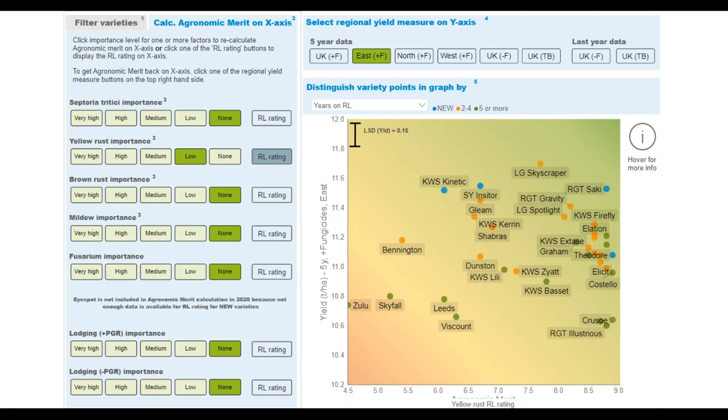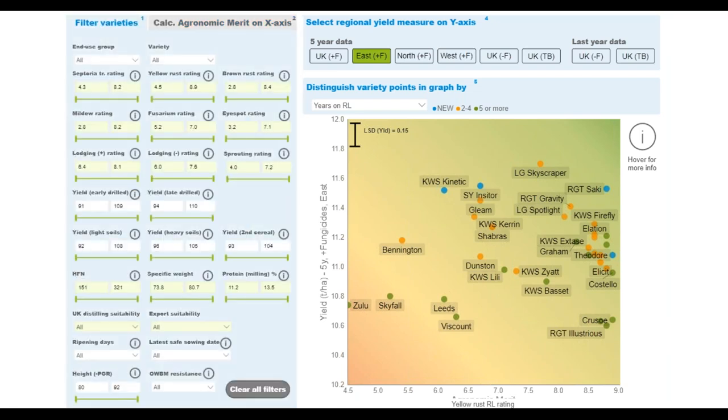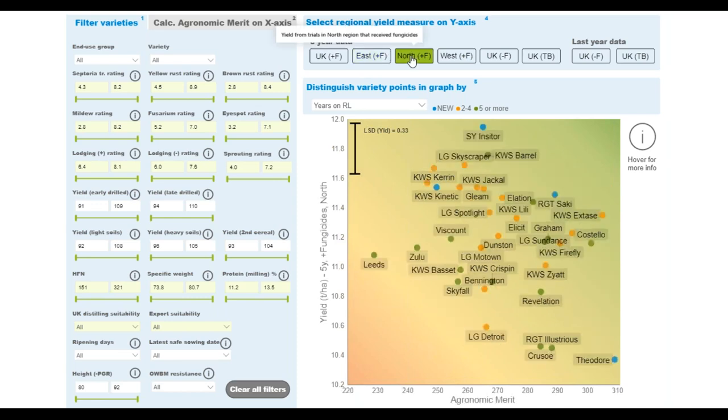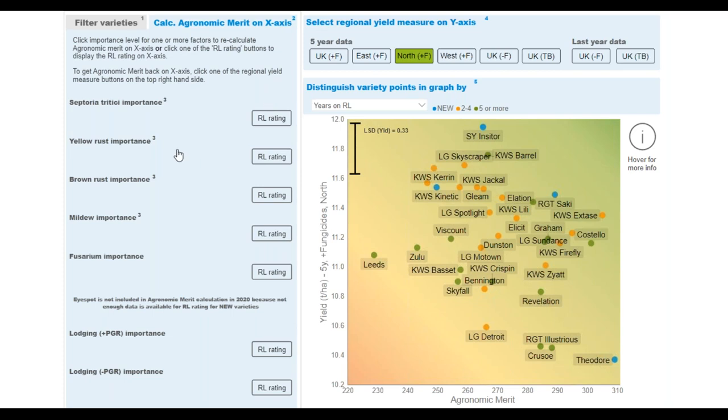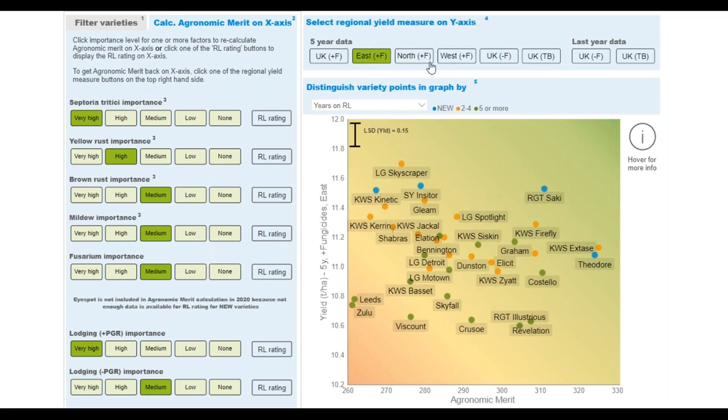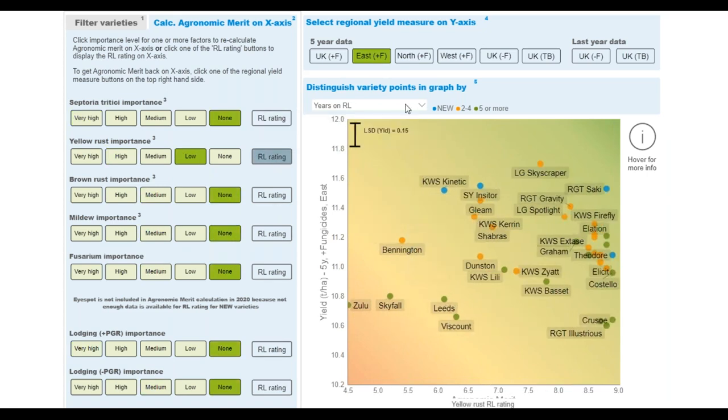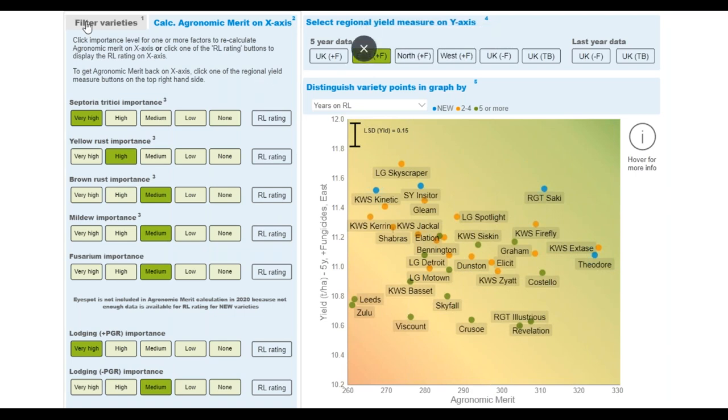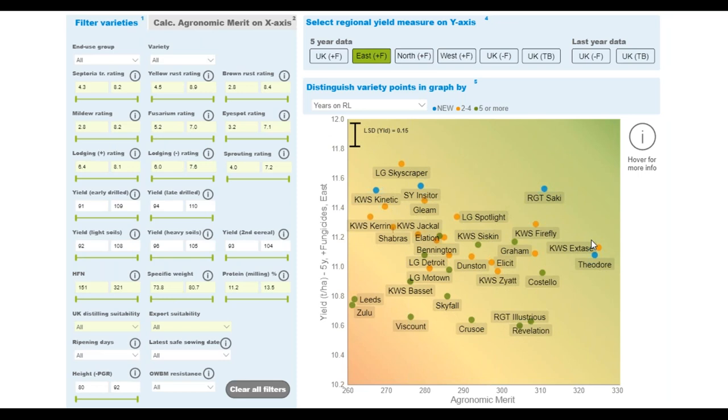I multiply the septoria rating by one, and I multiply the yellow rust rating with zero, and the same for all the other ones, and therefore the agronomic merit is simply the septoria rating. If you are just interested in septoria, if none of the others matters for you, then you might as well express agronomic merit simply as the septoria ratings or the yellow rust rating. You can see if you click that one now, everything is none except yellow rust rating. And then you can very clearly see that there's a whole bunch of varieties with a pretty good yellow rust rating, but not these ones.